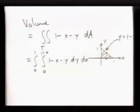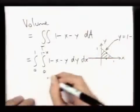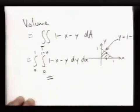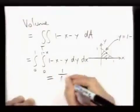So the volume is really this iterated integral, and I won't go through the details now, but if you go through it, you get 1/6.